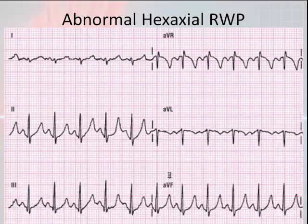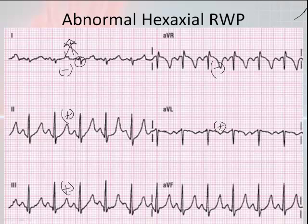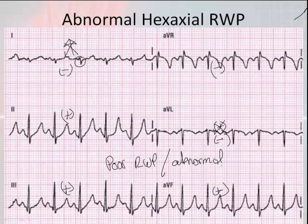Let's look at an abnormal R wave progression. In lead 1, you're supposed to be primarily positive, but you're not — you're primarily negative. Lead 2 is positive, lead 3 is positive, AVR is primarily negative, AVL is supposed to be primarily positive but it's negative, and AVF is primarily positive. This would be considered a poor — or abnormal — R wave progression.